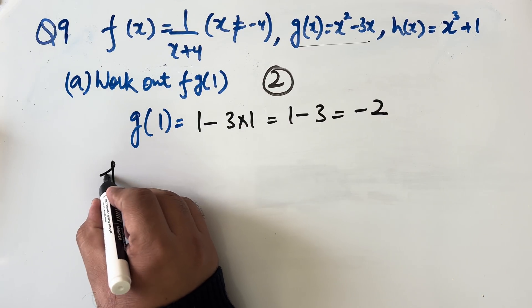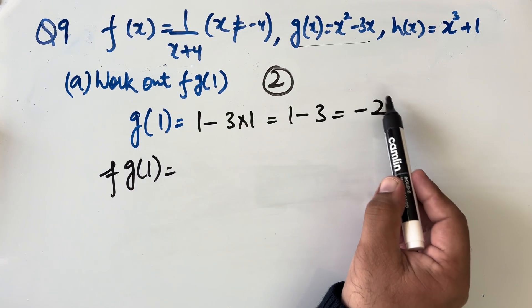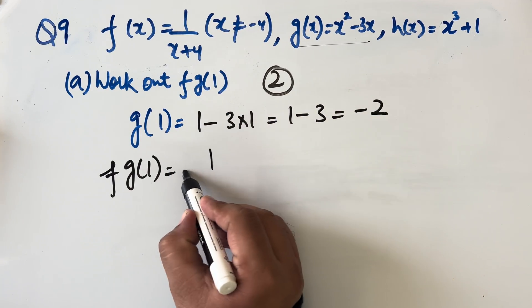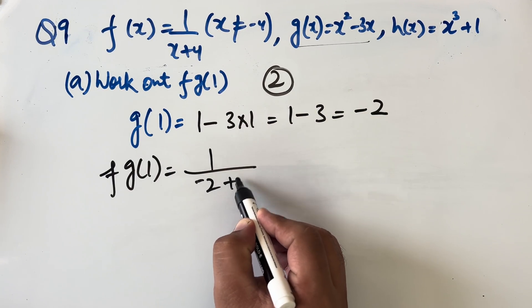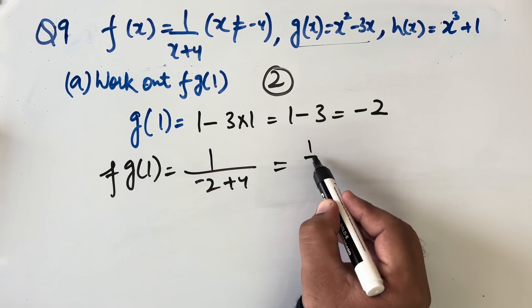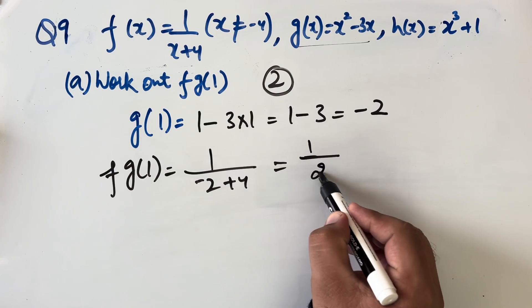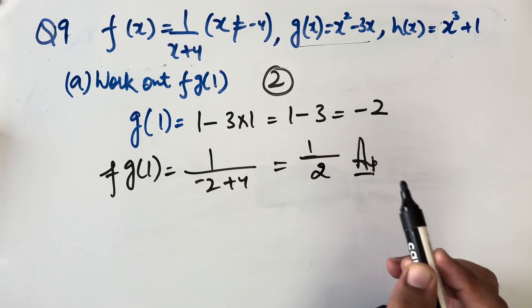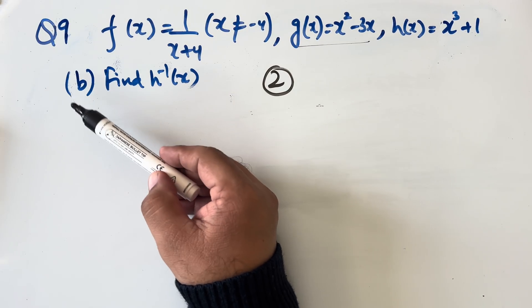Now find f(g(1)) = f(−2): substitute −2 into f(x) = 1/(x + 4), giving 1/(−2 + 4) = 1/2. So our answer is 1/2.